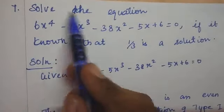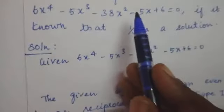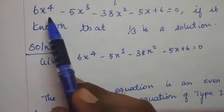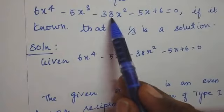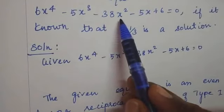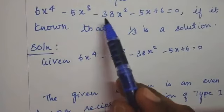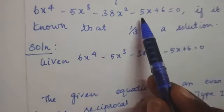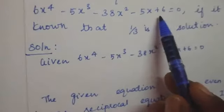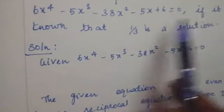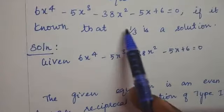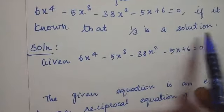Question number 7. Solve the equation 6x⁴ - 5x³ - 38x² - 5x + 6 = 0, given that 1/3 is a solution.